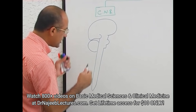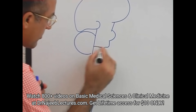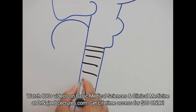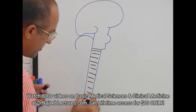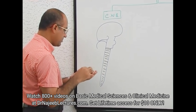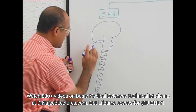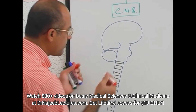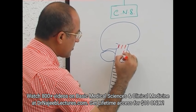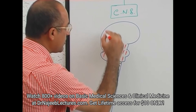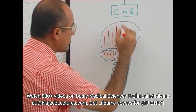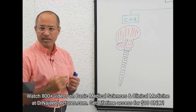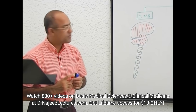This shaded area is your spinal cord, and this upper structure — the red area — is considered the brain. So the central nervous system consists of the brain and the spinal cord.